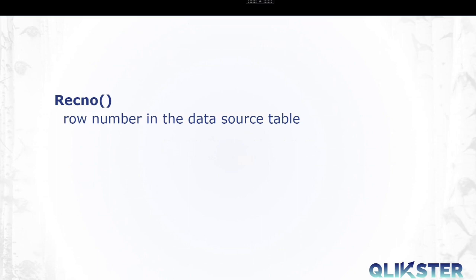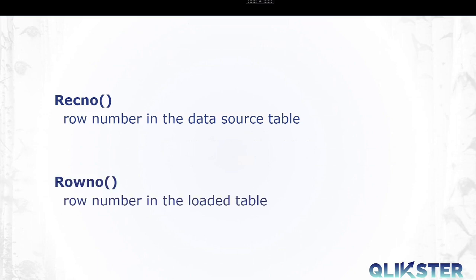RECNO, which stands for record number, returns the row number of the original data source table, whereas ROWNO, which stands for row number, returns the row number of the loaded table, not counting rows that were excluded by a WHERE clause.